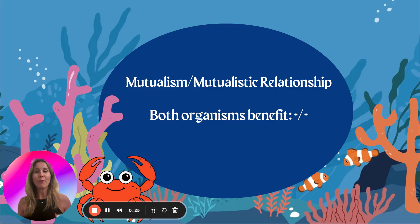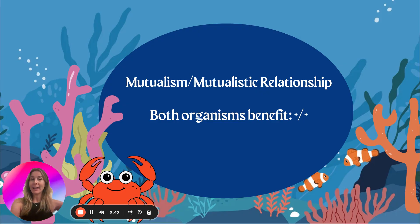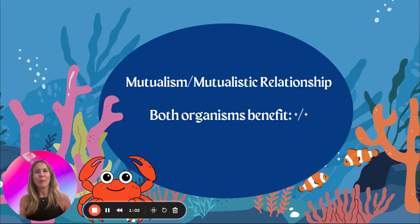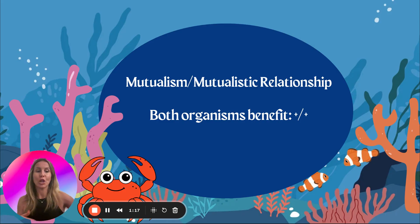Let's first talk about something that maybe you've heard before: mutualism, a.k.a. a mutualistic relationship. A mutualistic relationship is when both organisms benefit — one is providing to another and that other is providing back. So a great example for our class is boxer crabs and sea anemones. Looking at the picture, you can see a crab around a sea anemone, and clownfish too. Remember, that's just one example of two organisms benefiting, but it's the example you should know for this class.